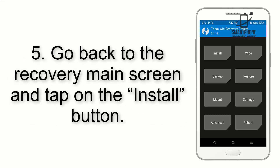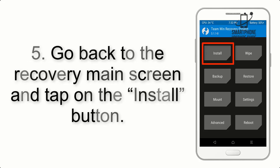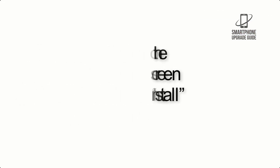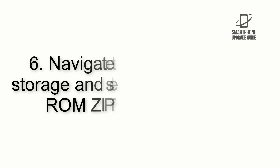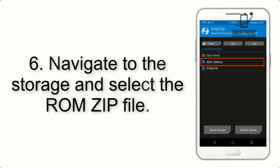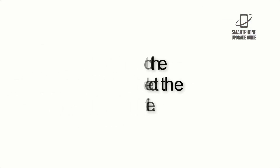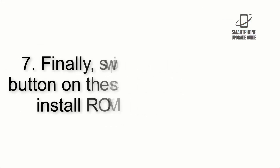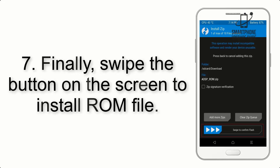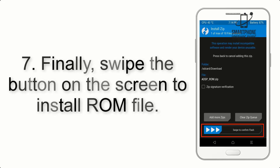Step 5: Go back to the recovery main screen and tap on the Install button. Step 6: Navigate to the storage and select the ROM zip file. Step 7: Finally, swipe the button on the screen to install the ROM file.